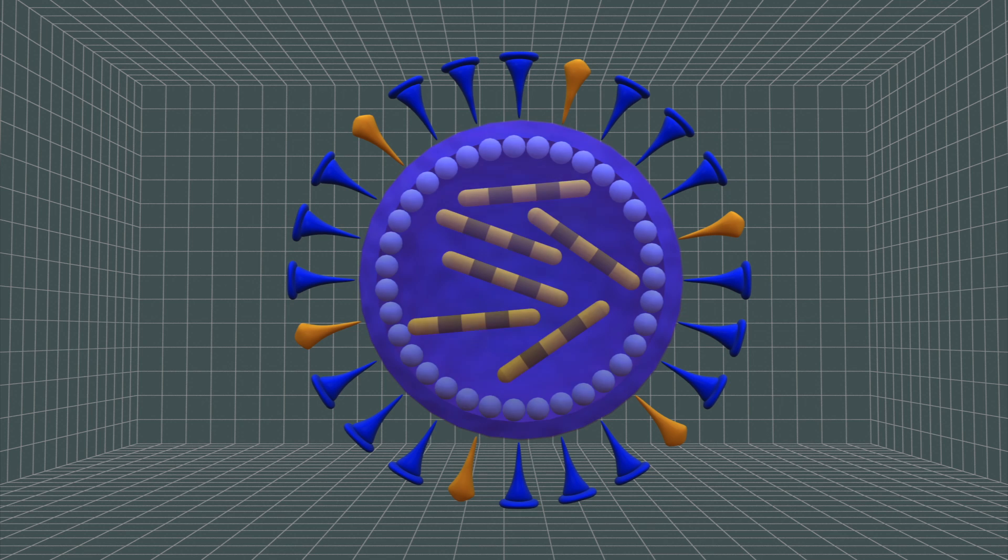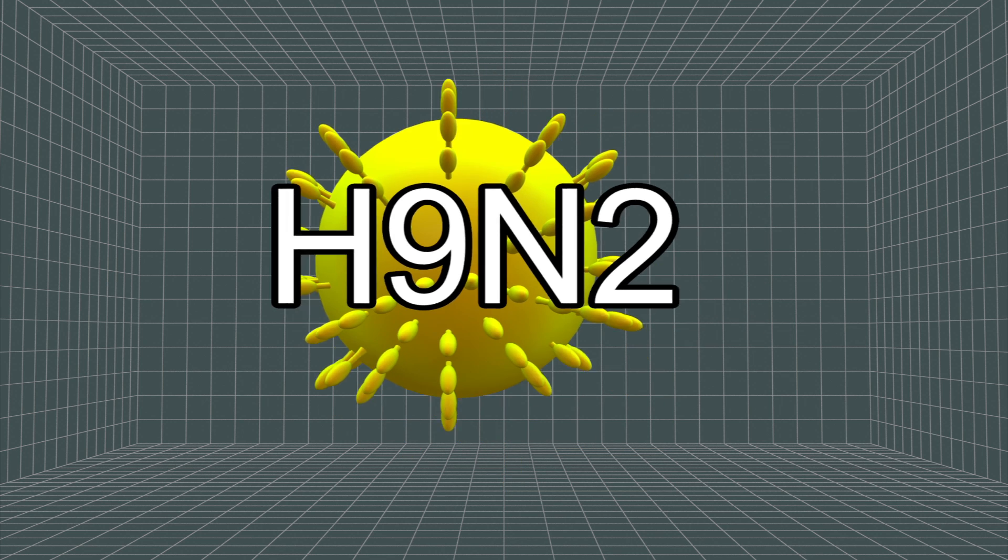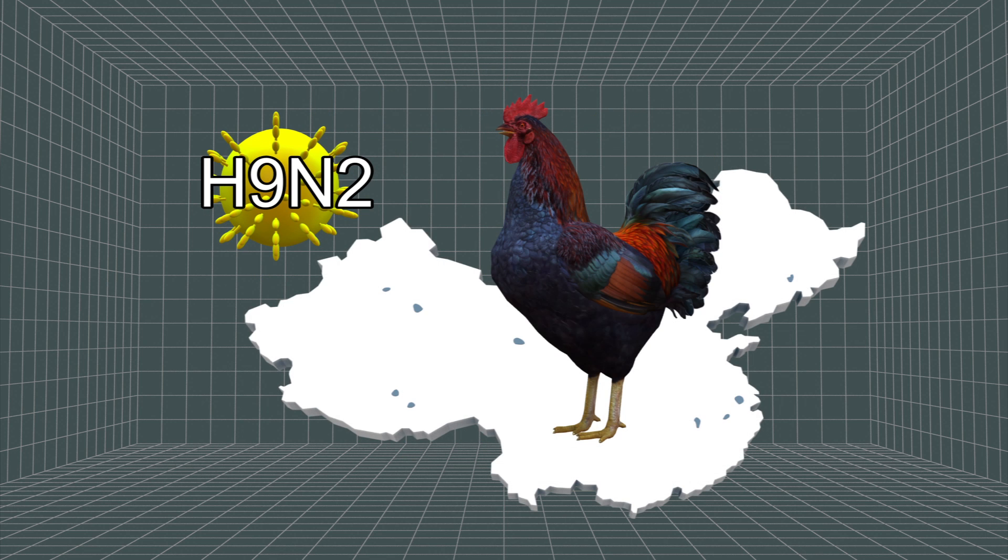All six internal genes of the new H10N8 virus are closely related to those of the H9N2 viruses that are circulating in poultry in China. Its genes also encode PB2 proteins, which make adaptation to mammalian hosts easier.